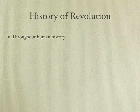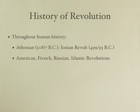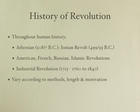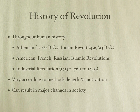Throughout human history, there have been revolutions that have taken place. Some of the more important ones that have caught the eye of most historians are the Athenian Revolt, the Ionian Revolt, the American, the French, the Russian, Islamic revolutions, and the Industrial Revolution that began sometime around 1715 through 1760 to 1840. Most of these revolutions vary according to methods, lengths, and motivations, and some do result in major changes in society. I'd like to add a caveat: most revolutions, particularly those aimed against governments, usually fail. The one unique thing about the American Revolution is that it was an absolute success where most revolutions are, in fact, failures.